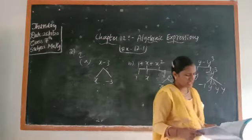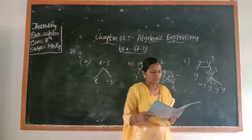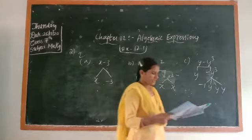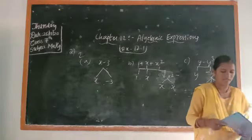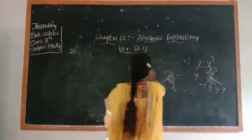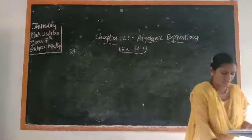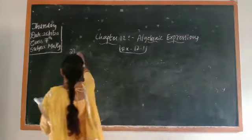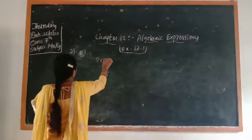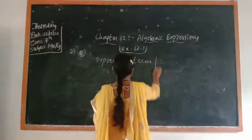Next, in the second part, identify terms and factors in the expressions given below. You have to make a column and write the expression, terms, and factors. There are two sets of questions — make a column and complete them. Write columns for: Expression, Term, and Factors.